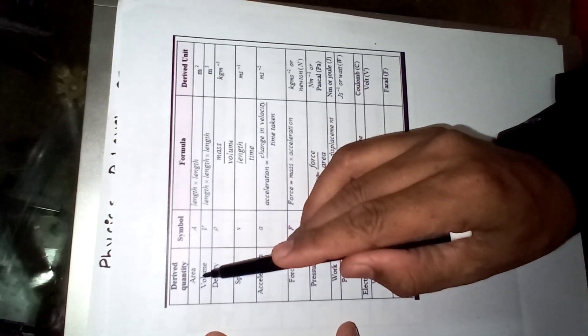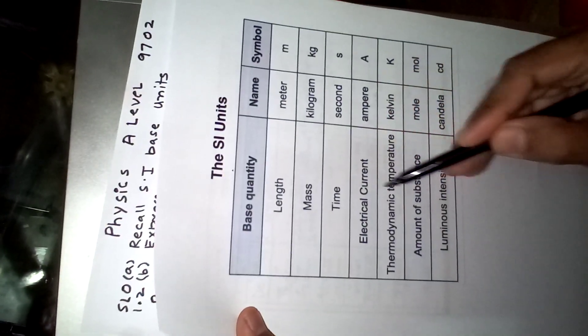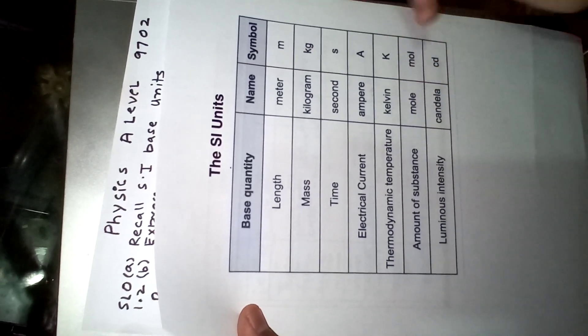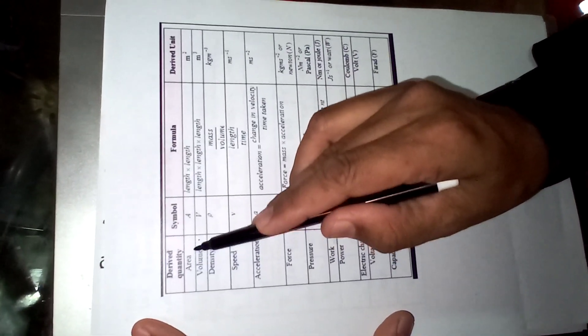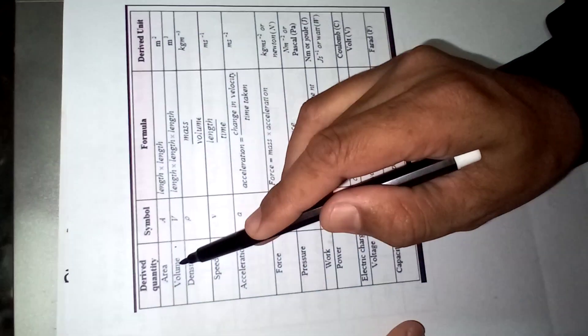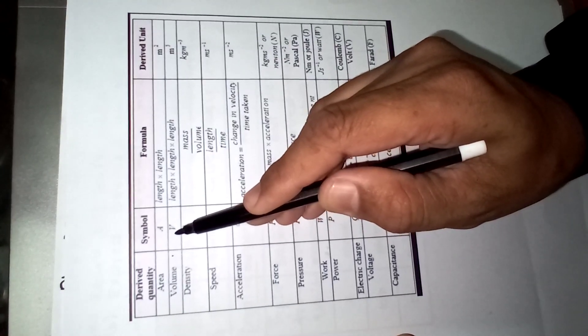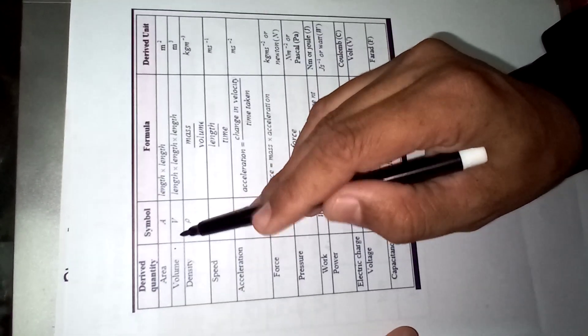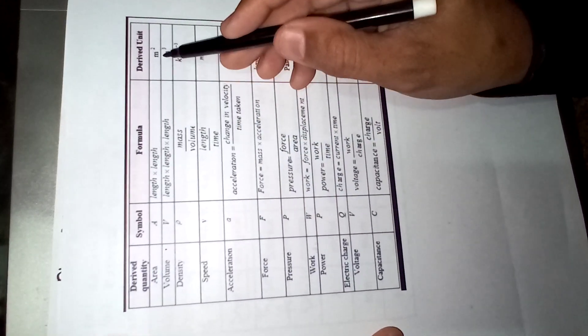For example, area: the area of a rectangle is length times width, a square is L squared, and a circle is π r squared. All these areas have the symbolic representation A, and the derived unit is meter squared.